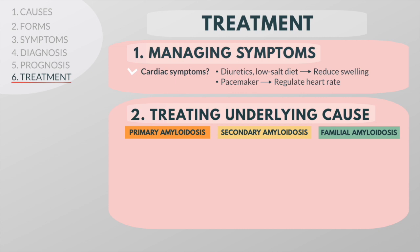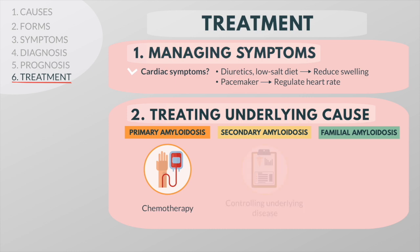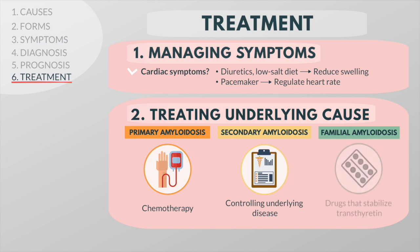In primary amyloidosis, the backbone of treatment is chemotherapy. It destroys the plasma cells in the bone marrow that produce the light chain proteins, and because fewer light chain proteins are produced, this reduces the number of amyloid fibrils. In secondary amyloidosis, treatment focuses on controlling the underlying disease.